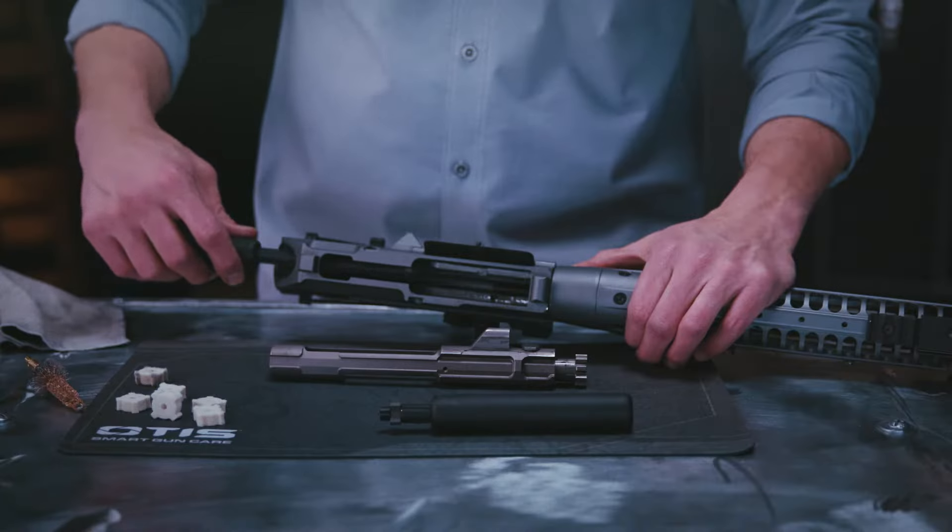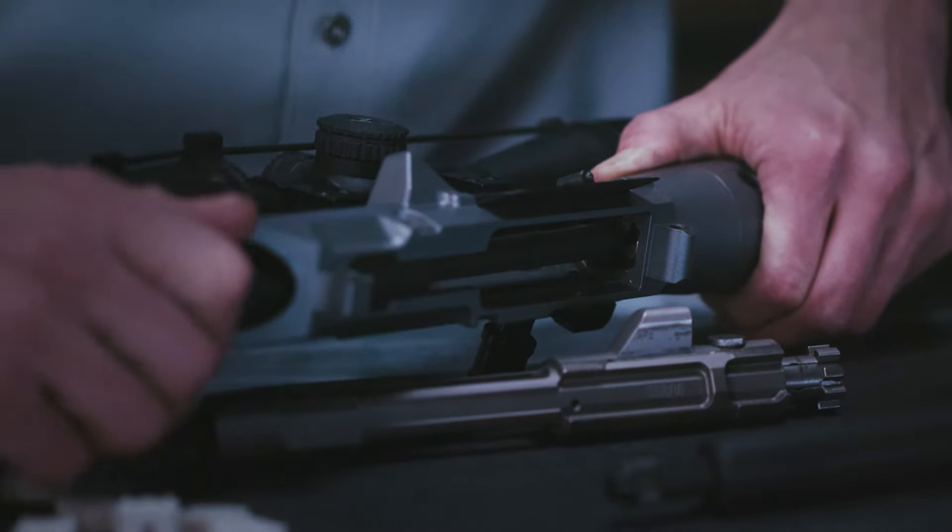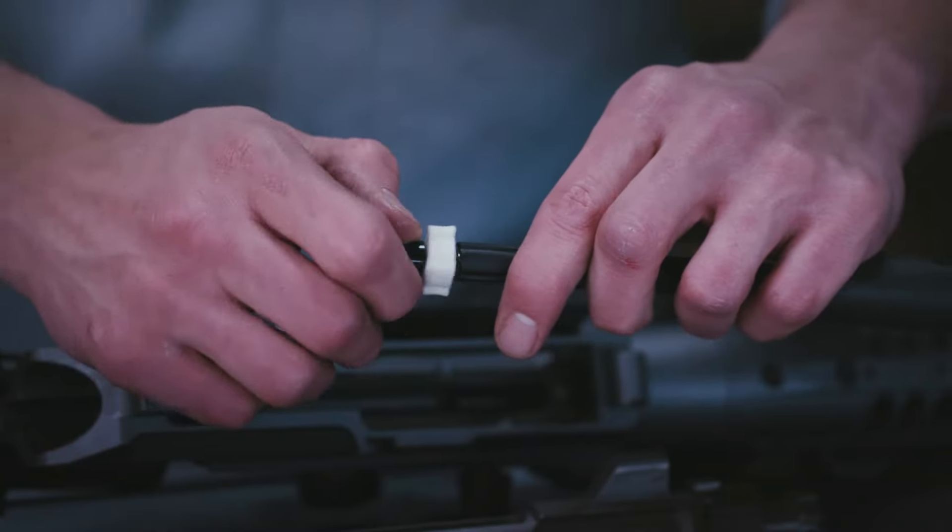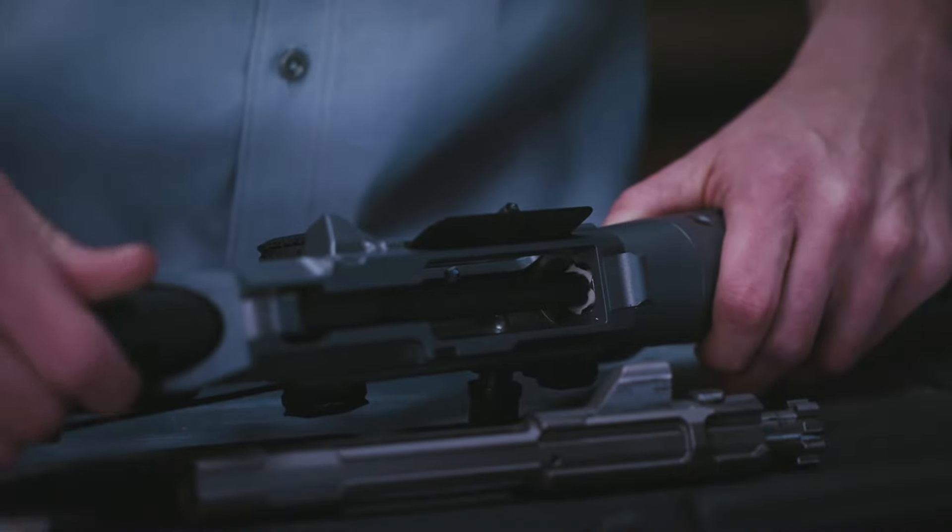Extend the tool and insert it into the chamber, turn it clockwise to scrape away carbon and fouling, then replace the scraper with a cleaning pad and do the same thing.